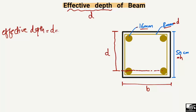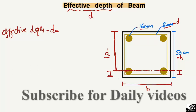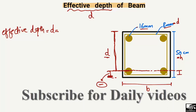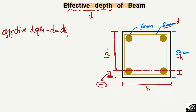So the effective depth D is equal to the total depth H, from which we subtract the distance from the extreme bottom fiber to the mid of the reinforcement. We do not need this bottom distance, so we subtract it. Effective depth equals total depth H, minus the concrete cover down to the stirrups, minus the diameter of the stirrups, minus half the diameter of the main bar.